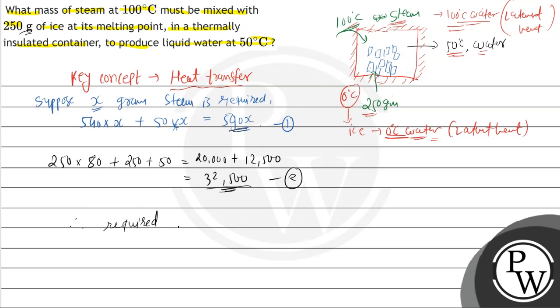Required mass is equal to 32,500 by 590x.